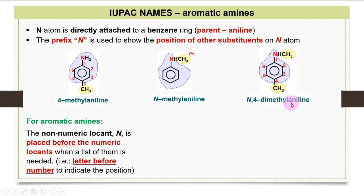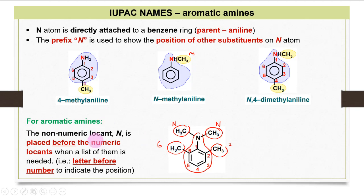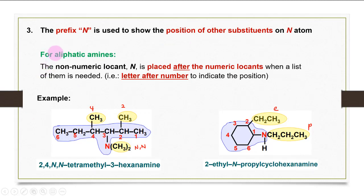For a structure with methyl groups at nitrogen (N and N) and at carbon positions two and six, you have four methyl groups total. Following the aromatic amine rule — letter before number — the full name is N,N,2,6-tetramethylaniline. Comparing back to aliphatic amines with similar substituents, the order is letter after number, giving arrangements like 2,4,N,N-tetramethyl.